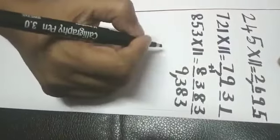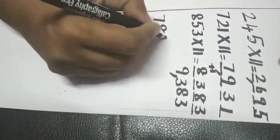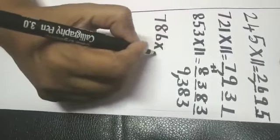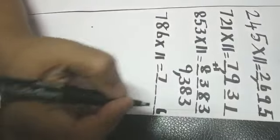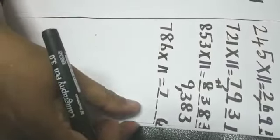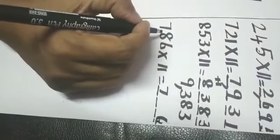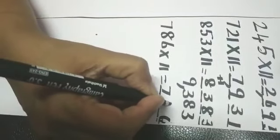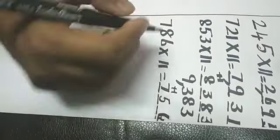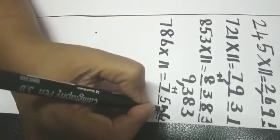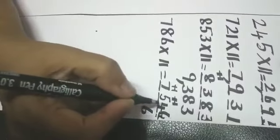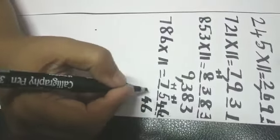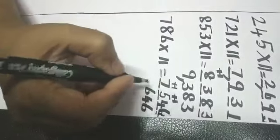Next sum: seven hundred and eighty-six multiplied by eleven. Draw four blanks, first number seven, last number six. Seven plus eight is fifteen — write five and carry one. Eight plus six is fourteen — write four and carry one. So six, four, five plus one is six, seven plus one is eight. The answer is 8646.